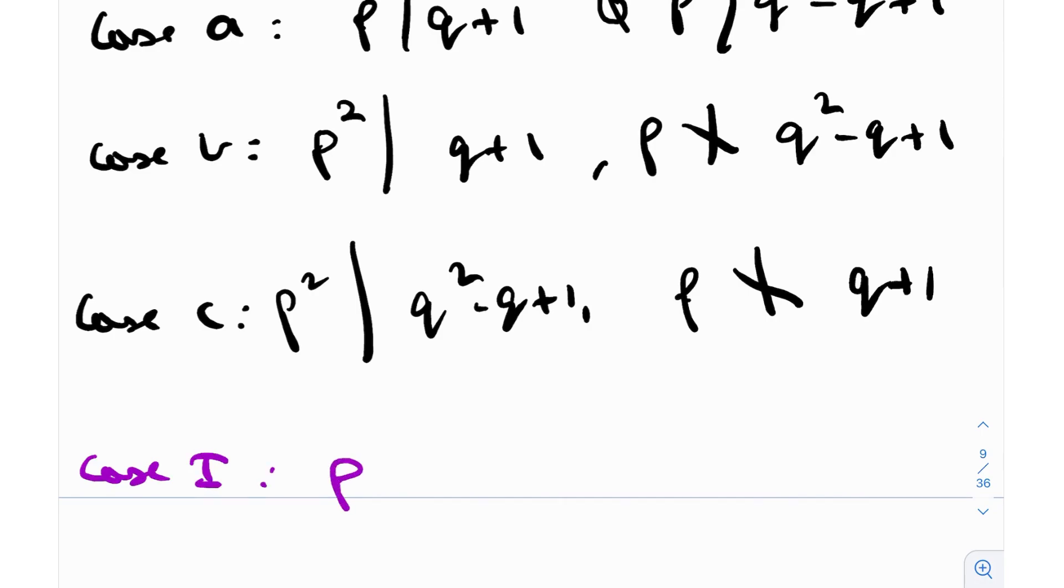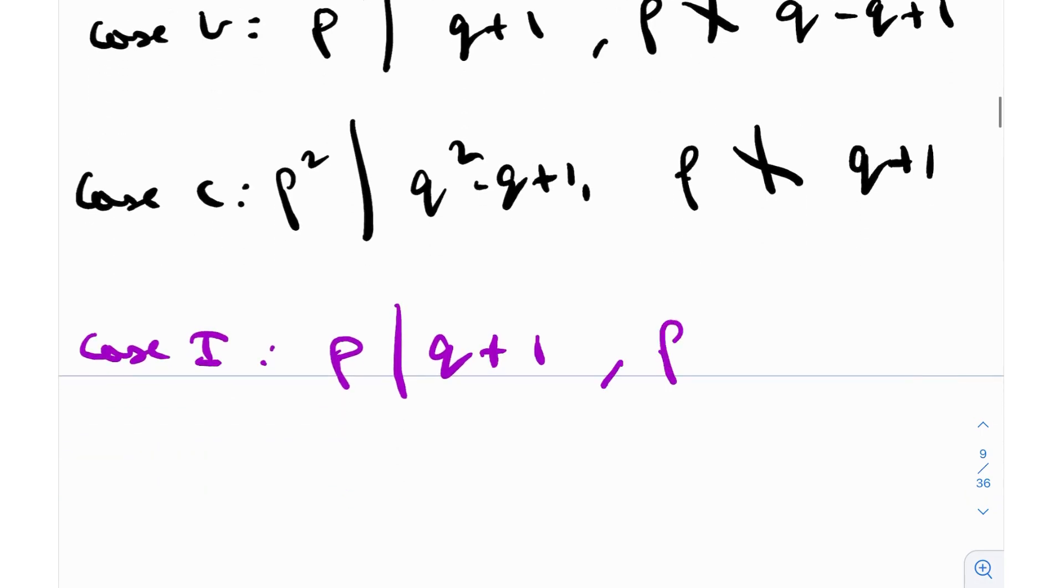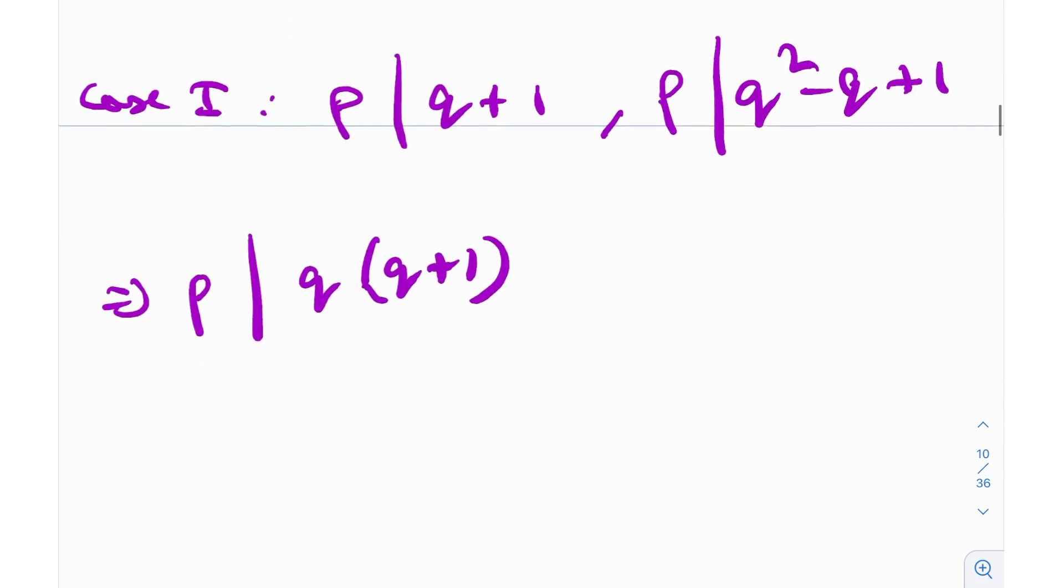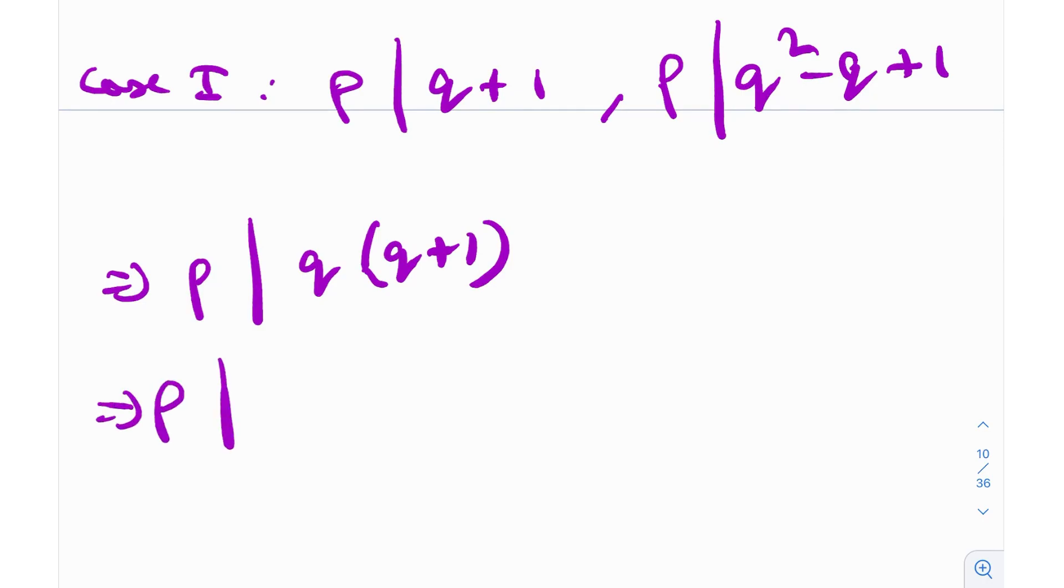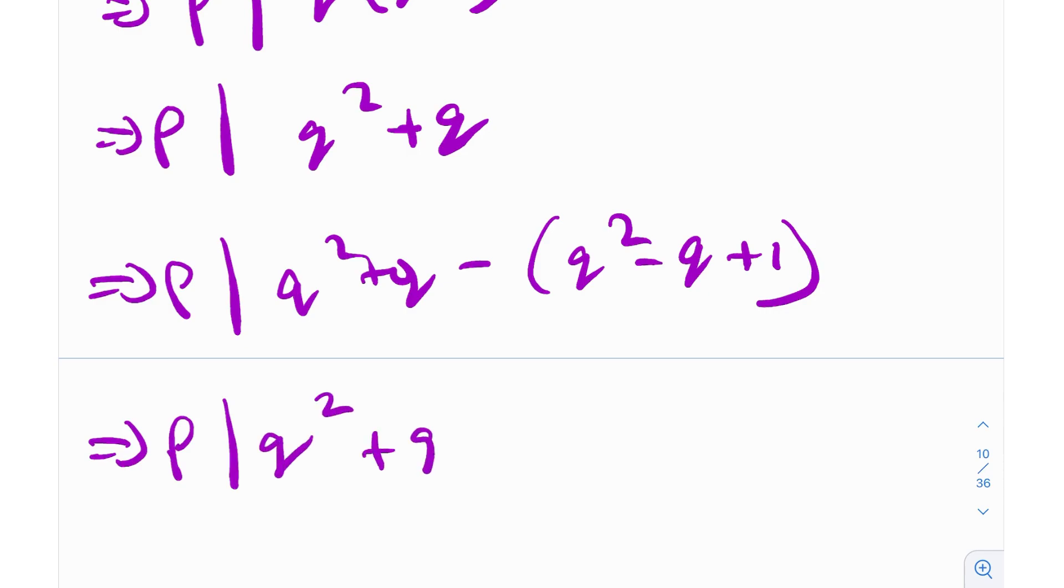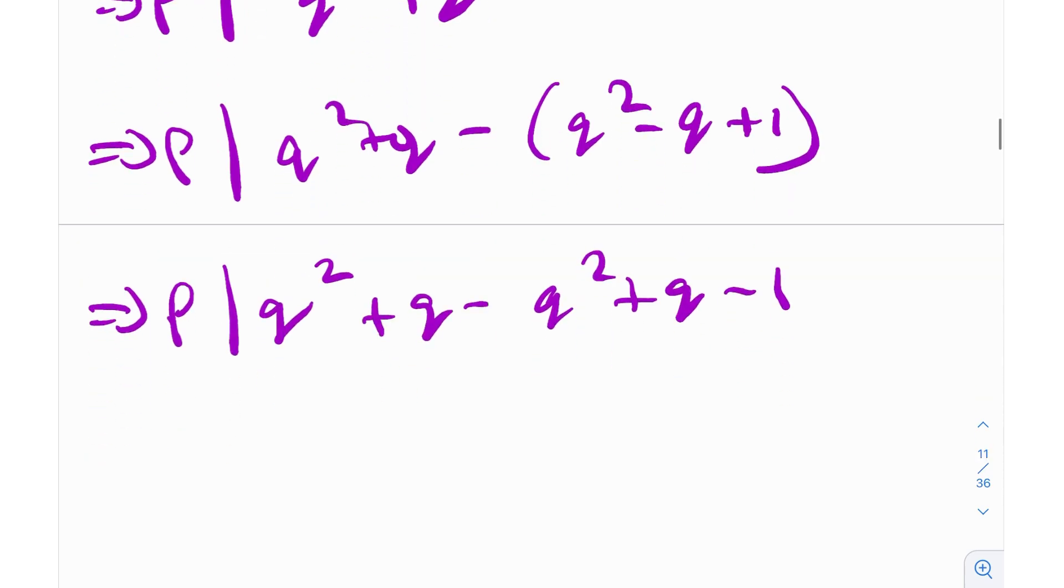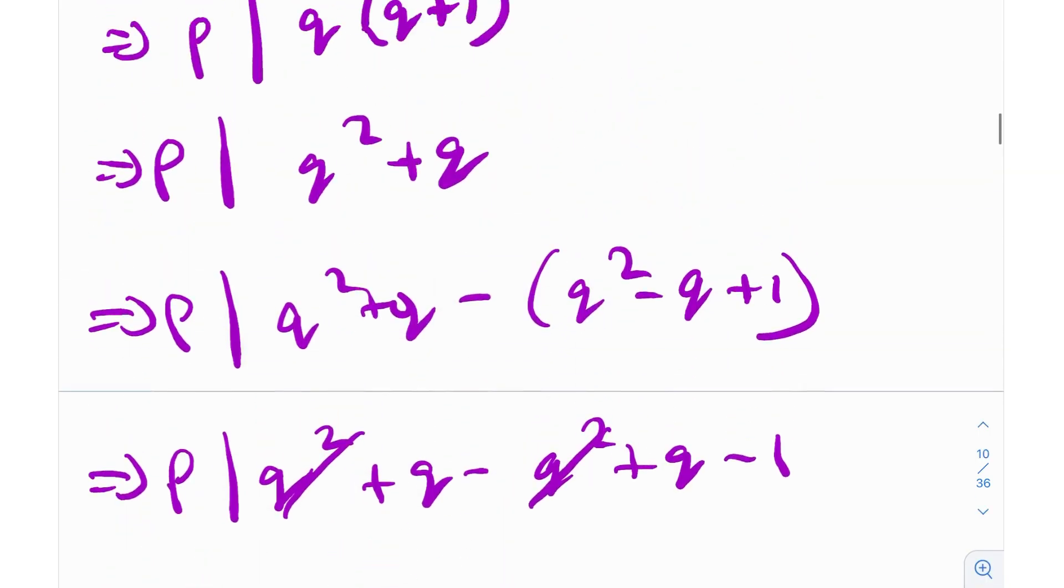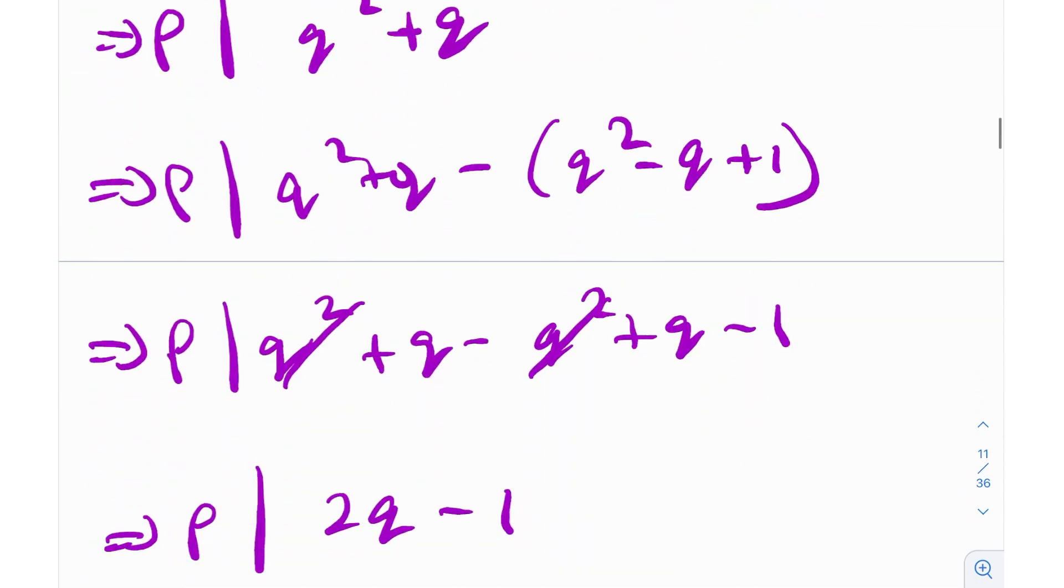Case A: p divides q + 1 and p also divides q^2 - q + 1. If p divides q + 1, that means p should also divide q times (q + 1). So effectively p should divide q^2 + q, and p also divides the other quantity. So p divides q^2 + q - (q^2 - q + 1), which implies that p divides 2q - 1. This is a really common technique to reduce this quadratic down to a linear expression.